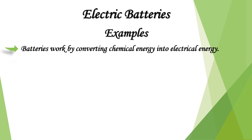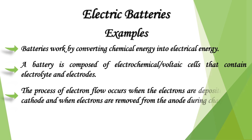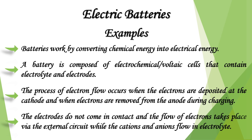Batteries work by converting chemical energy into electrical energy. A battery is composed of electrochemical voltage cells that contain electrolyte and electrodes. Electrons are deposited at the cathode and removed from the anode during charging. The electrodes do not come in contact; electron flow takes place through the external circuit while cations and anions flow through the electrolyte.